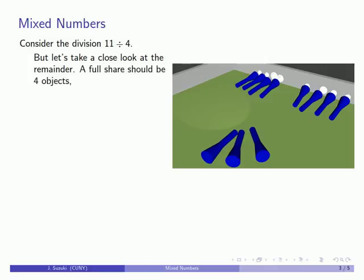However, let's take a close look at what our remainder is. Now, a full set would be 4 flashlights, 4 objects. And so, in some sense, this last group of flashlights here is missing a flashlight to form a full set. Well, how would we describe this amount? Well, our full set is a unit. Each individual flashlight is 1 of 1, 2, 3, 4 objects that should be in that unit. And so each flashlight is 1 fourth of the set.